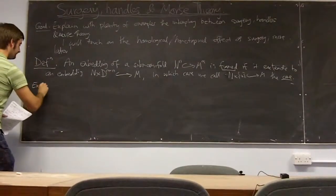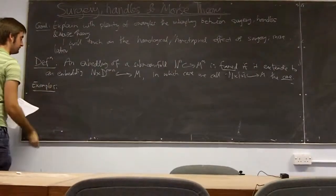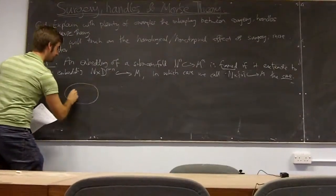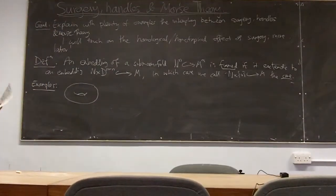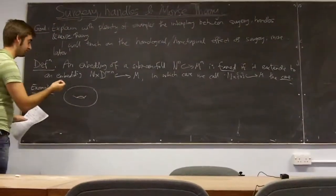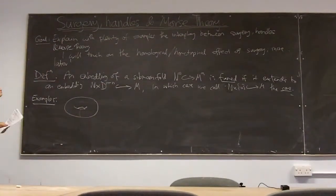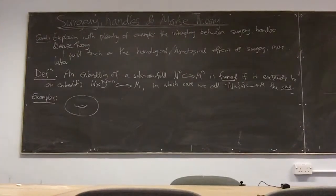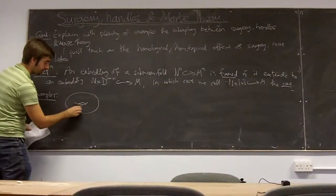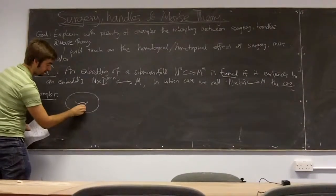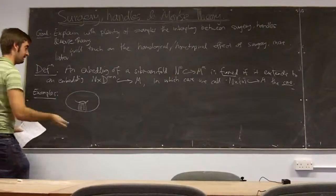A couple of examples. First of all, we just take a torus. I'm going to use a colour system in this lecture — the red will be our embedded circle. And we can extend this to a framed embedding because we can cross with a little interval here, and on the back. So, this gives us a framed embedding.